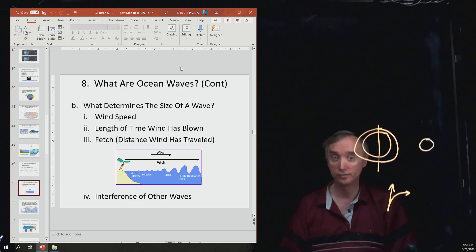Okay, the wind speed. So the greater the wind is that's blowing across the surface of the ocean, the greater the waves are going to be. The length of time the wind has blown. So the longer the wind blows across the surface of the ocean, the greater the ocean waves are going to be.